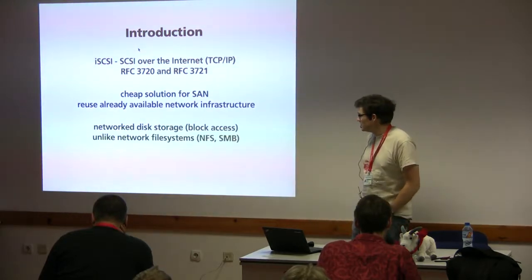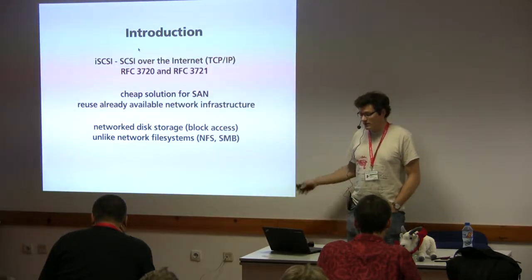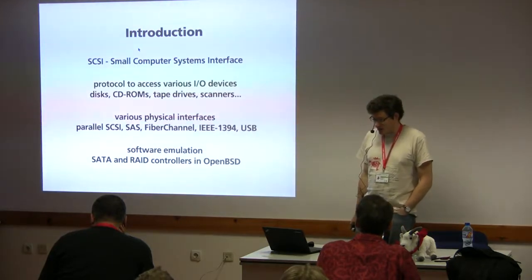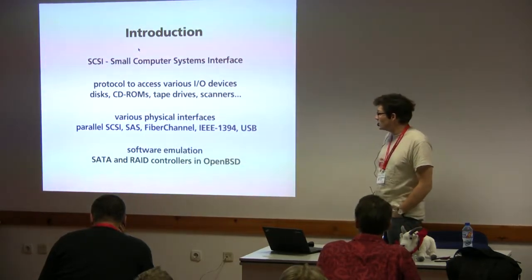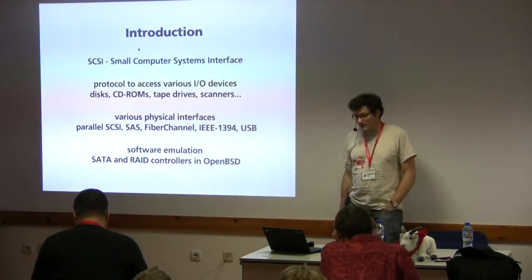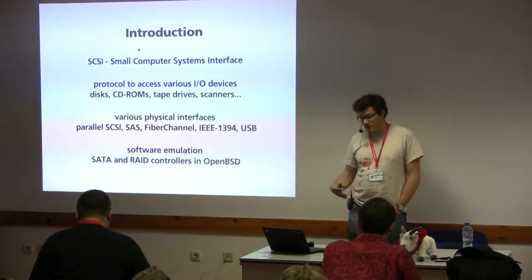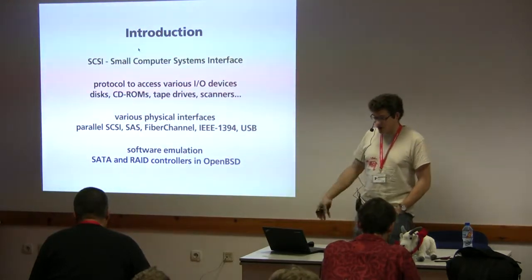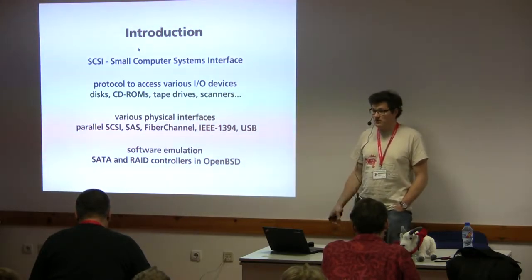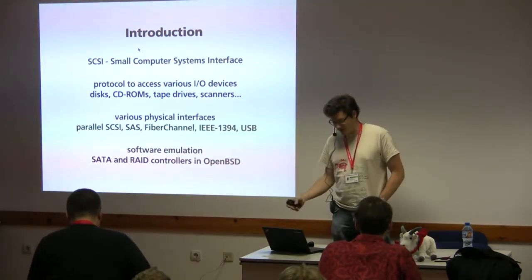iSCSI is network disk storage — block access, not a network file system like NFS or SMB. SCSI itself, the Small Computer Systems Interface, is really old. It is a protocol to access IO devices: it started with disks, then CD-ROMs, tape drives, scanners. There was even Ethernet over SCSI.